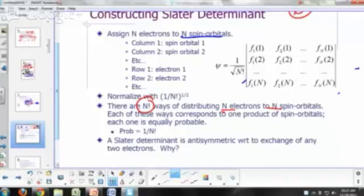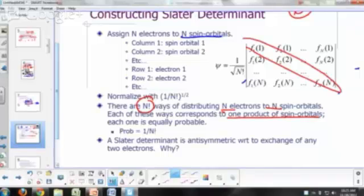So there are n factorial ways of distributing n electrons to n spin orbitals. Each one of these ways corresponds to one product of spin orbitals. For example, one way would be, like if you multiply all of these, so you say electron one is in spin orbital f1, electron two is in spin orbital f2, electron three is in spin orbital f3, all the way to electron n is in spin orbital fn. That's one of the n factorial ways. So that's one of the n factorial terms you get when you expand out the determinant.